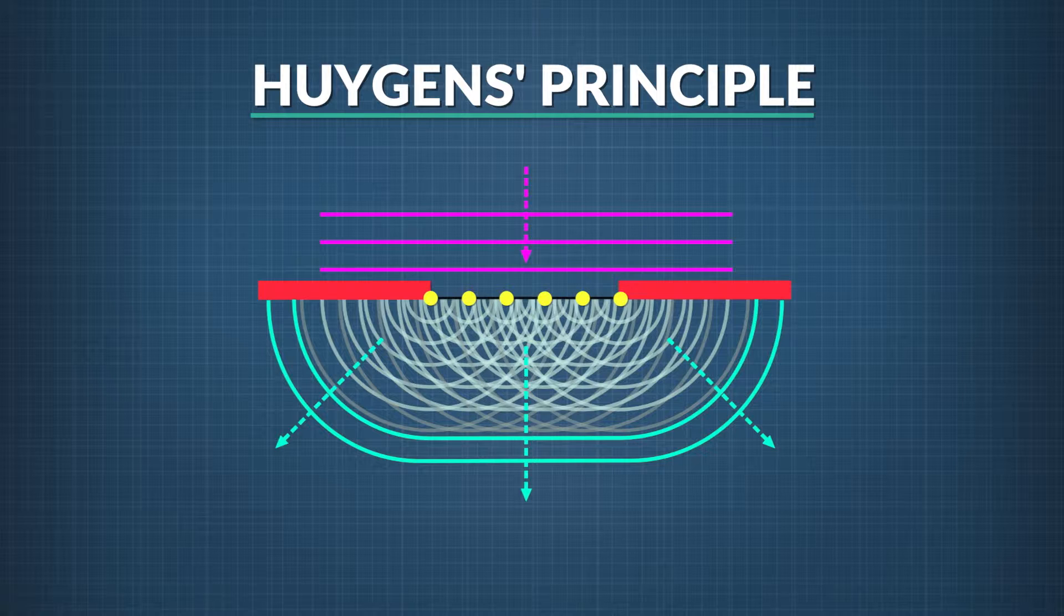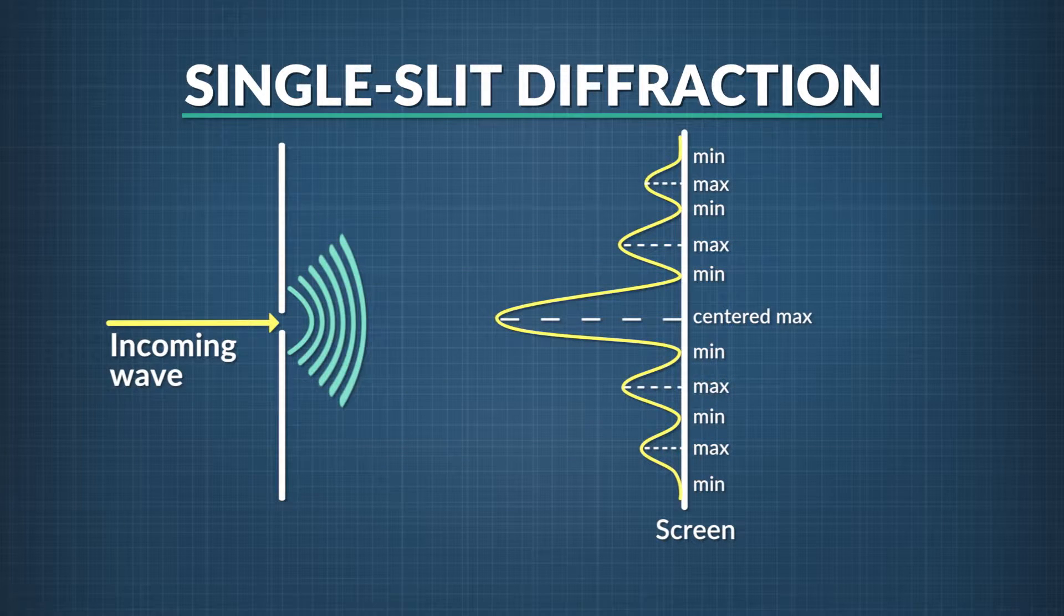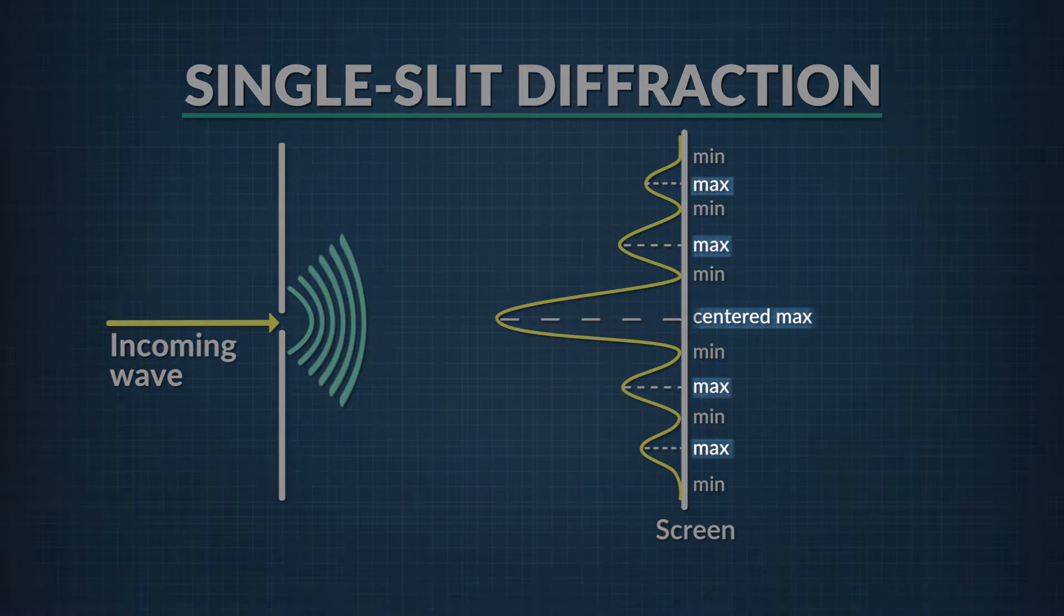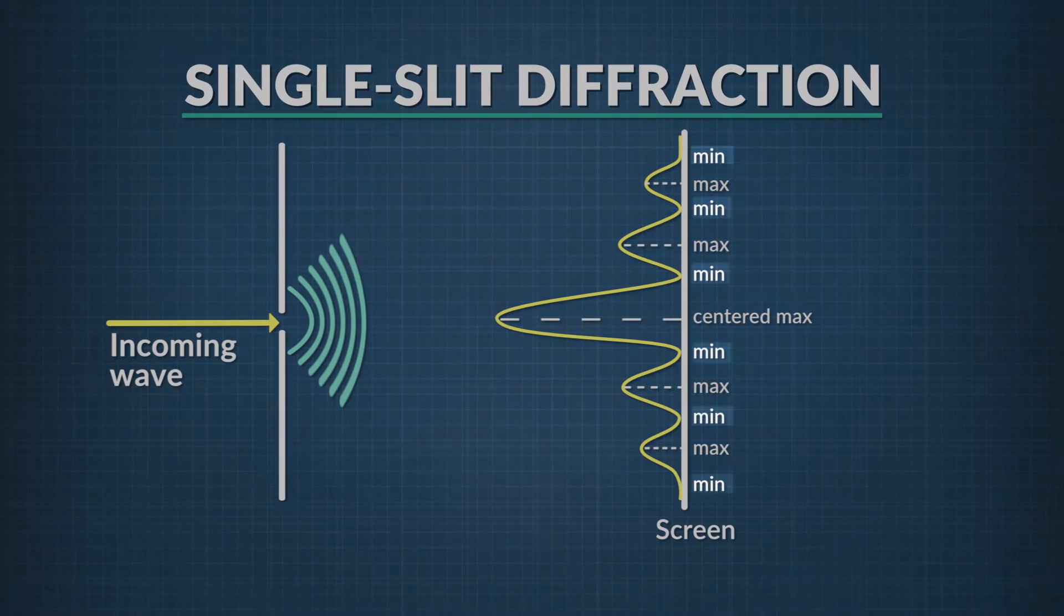The yellow dots in this image represent those individual points, called wavelets. This means that these independently behaving waves will interact on the screen, some in phase with one another, producing maxima, and some out of phase, producing minima.